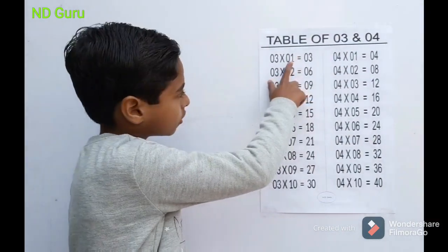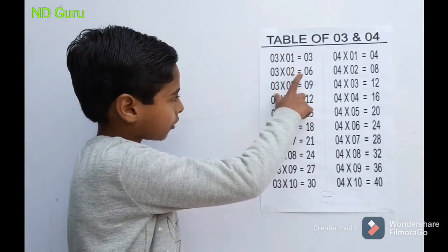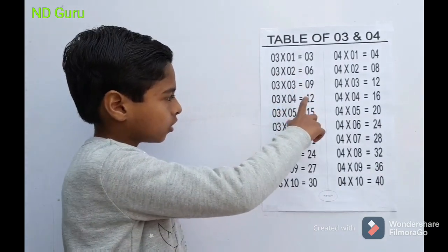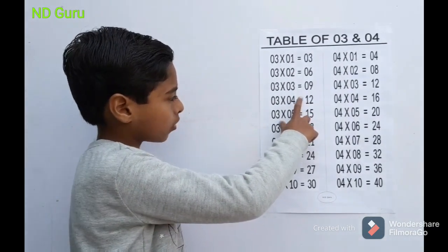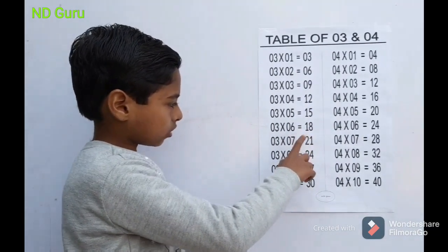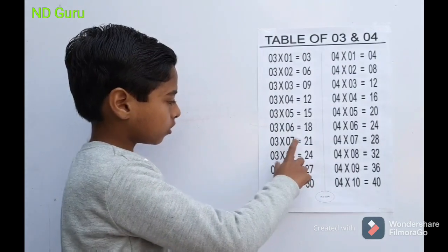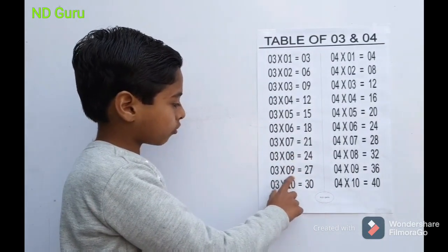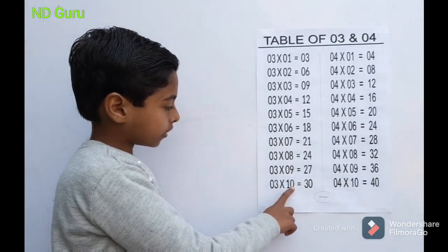Table of 3. 3 1s are 3, 3 2s are 6, 3 3s are 9, 3 4s are 12, 3 5s are 15, 3 6s are 18, 3 7s are 21, 3 8s are 24, 3 9s are 27, 3 10s are 30.